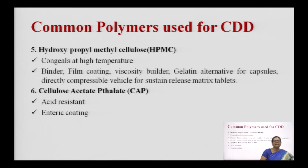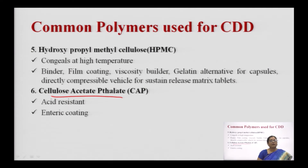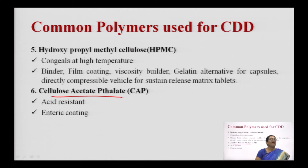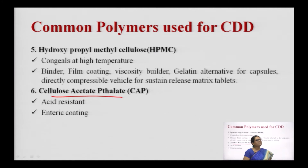HPMC has been used as a directly compressible vehicle for preparing sustained release matrix tablets. The last important cellulose derivative is cellulose acetate phthalate (CAP), an important enteric coating material. It gives an acid-resistant coat, particularly useful for delivering acid-labile drugs. The coating does not dissolve at the acidic pH of the stomach; the dosage form reaches the intestines where the CAP coating dissolves and the drug is released, preventing degradation in the acidic stomach pH.